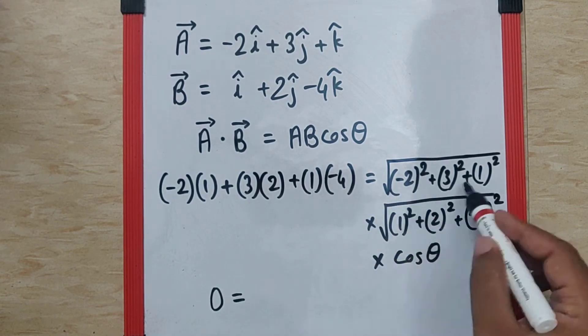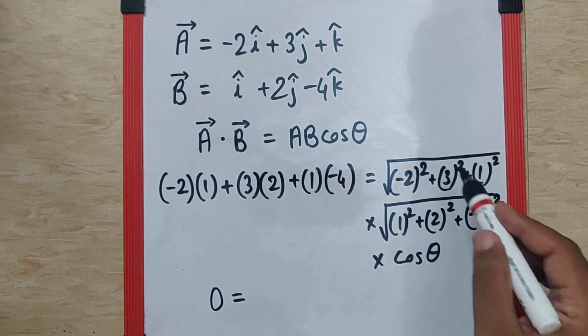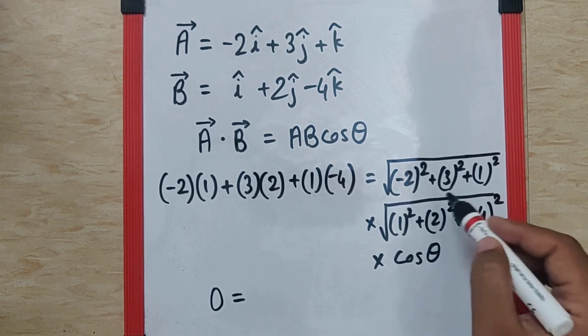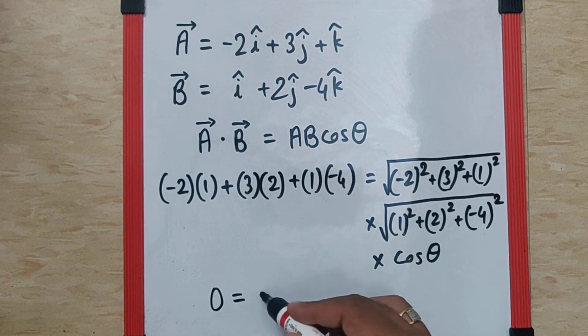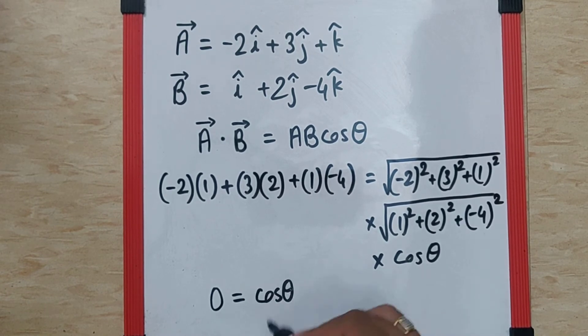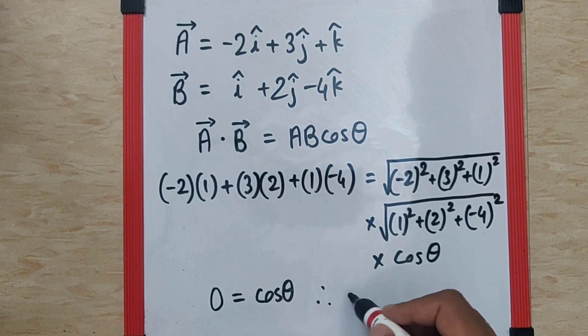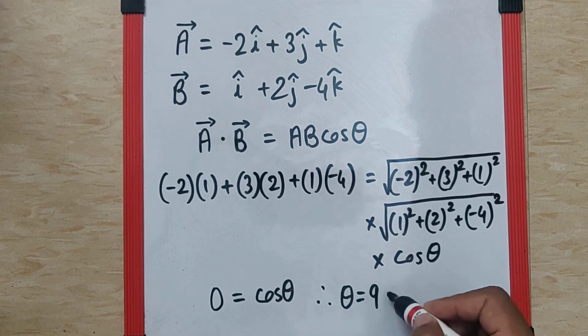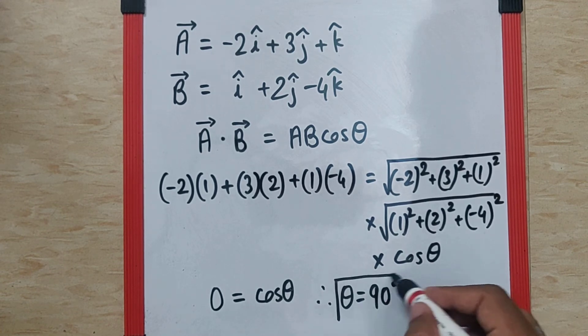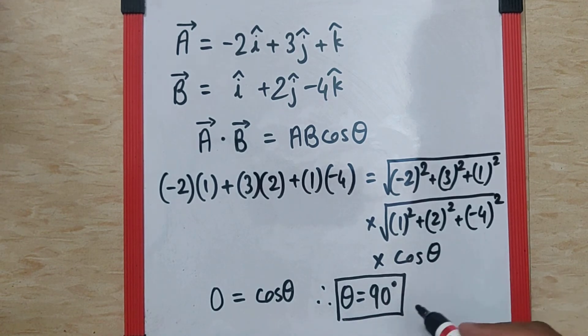On the other hand, whatever be the value of this, that number is not going to be 0 which means cos theta is 0 and cos theta is 0 only if theta is 90 degrees. So, the angle between A bar and B bar is 90 degrees which is the final answer.